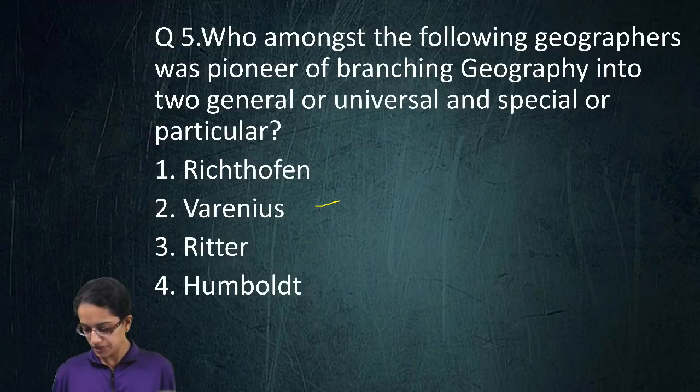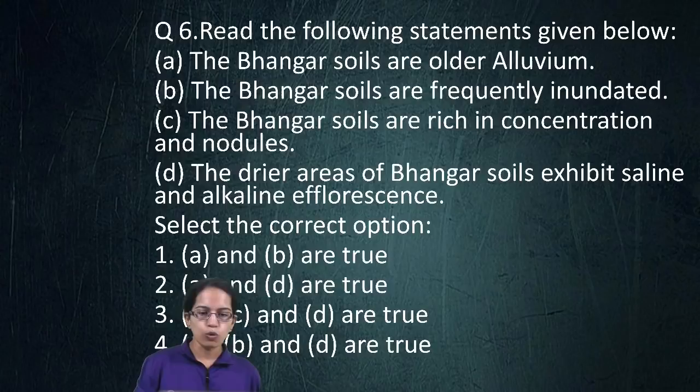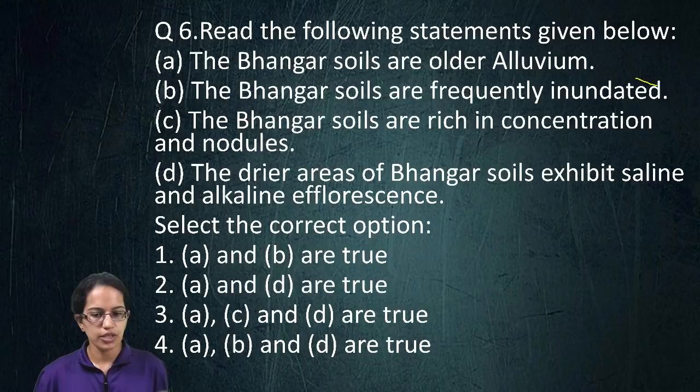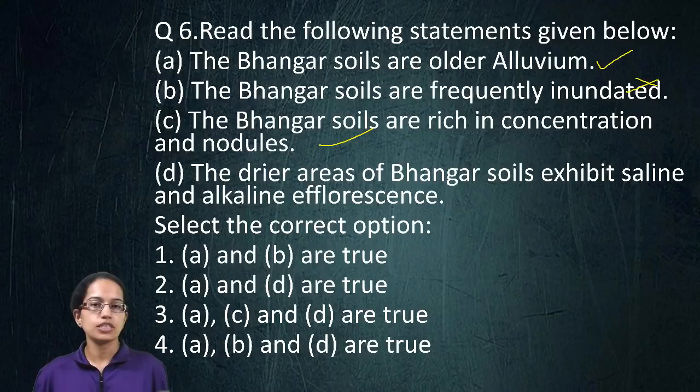A straightforward question: Bhangar is the old alluvial and Khadar is the new alluvial. Khadar is indented, so that becomes the incorrect option. The first statement is correct, and Bhangar is rich in kankar nodules, so option C is correct. However, saline efflorescence is seen in Khadar soil, not in Bhangar. So A and C are the right options in this question.